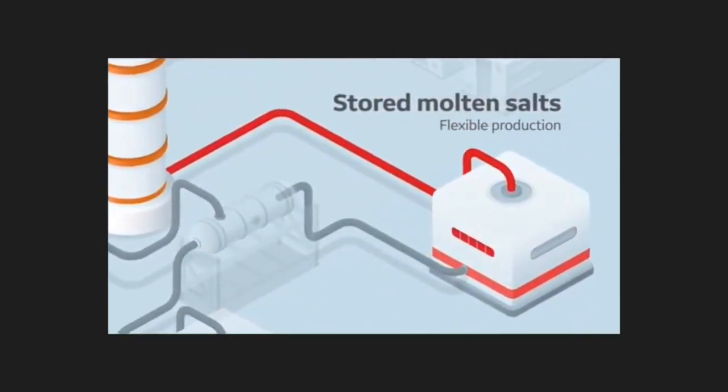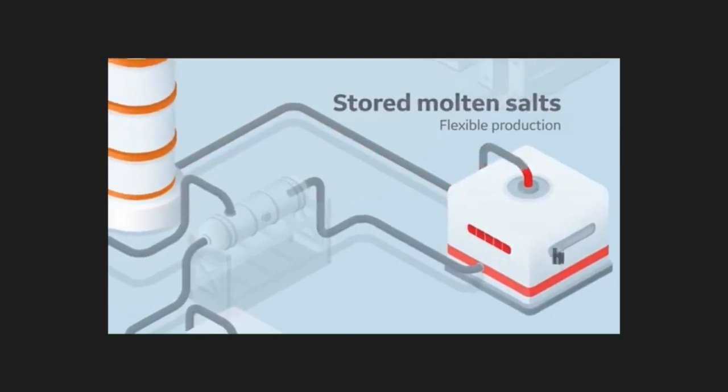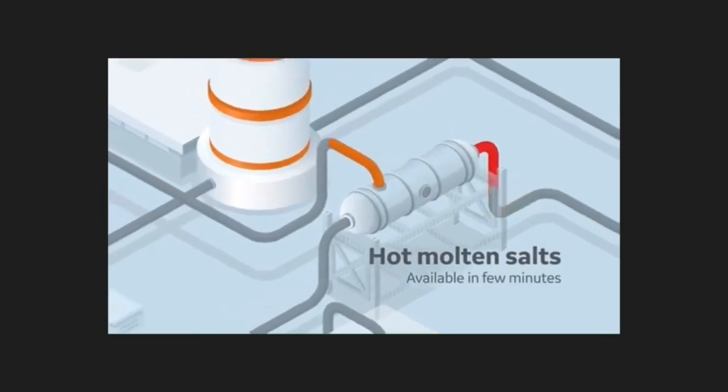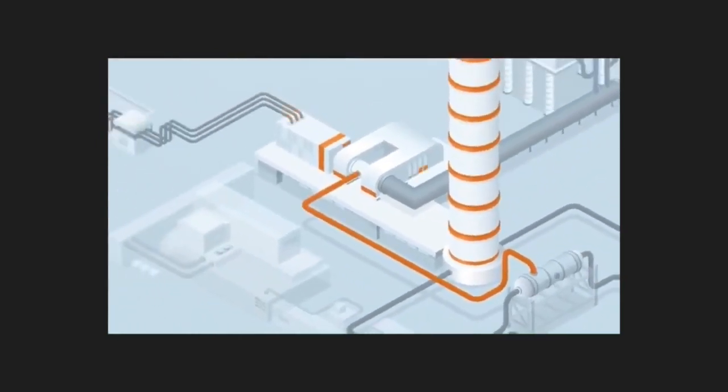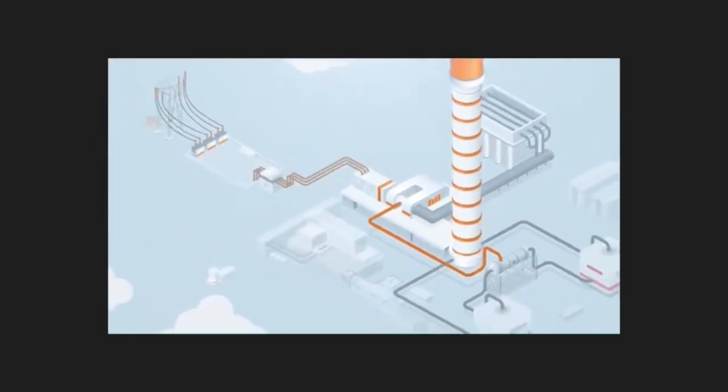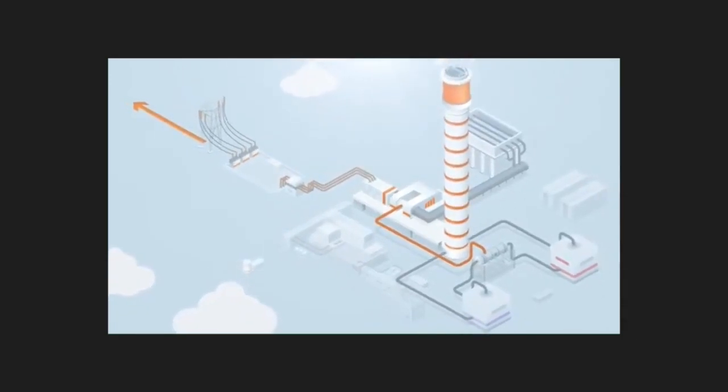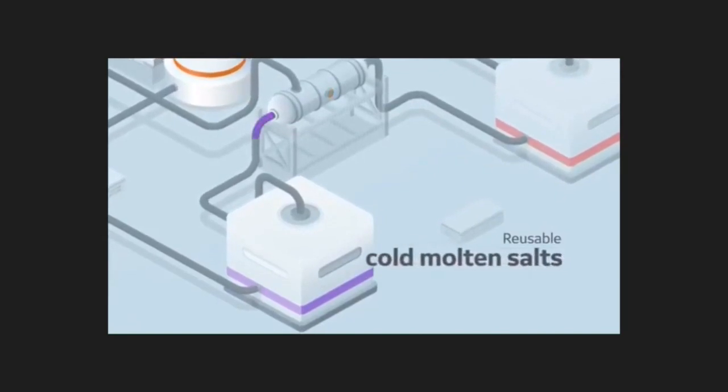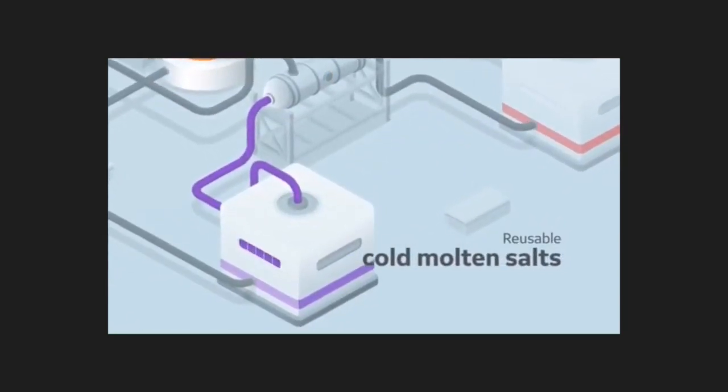They can store this energy to maintain electricity production for several hours after sunset. When needed, within a few minutes the hot molten salts are sent to a steam generator to activate the turbine and generate electricity. Once used, they're cool enough to be returned to the cold molten salts for reuse in a new cycle.